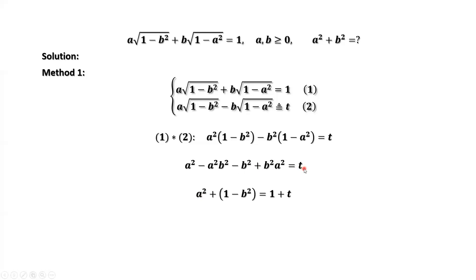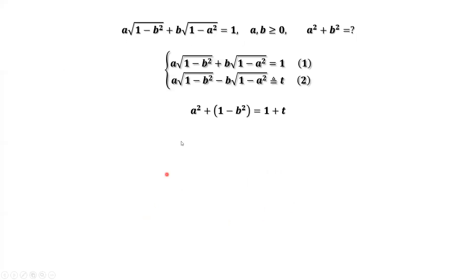Adding 1 to both sides, we have a squared plus 1 minus b squared equals 1 plus t. This is our first result.